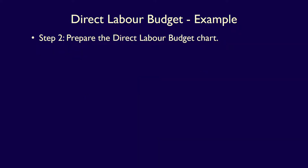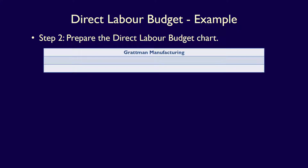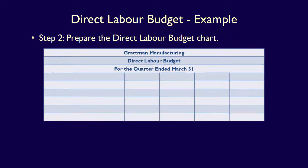We'll apply this in step two: prepare the direct labour budget using a chart. As always, we start with the title, including the company name — Gratman Manufacturing — then the name of the budget — direct labour budget — and the date for the quarter ended March 31st. We then add the necessary columns. Since we're completing the budget for the months and the quarter, we have one column for the description, three columns for the months, and one column for the quarter, for a total of five columns. The headings are: description, January, February, March, and the total column, which here is named first quarter.